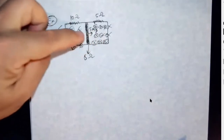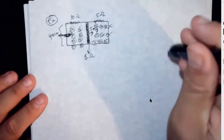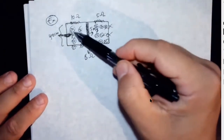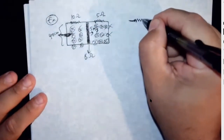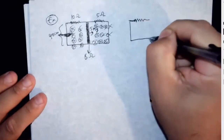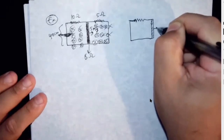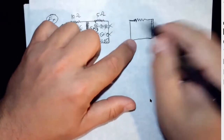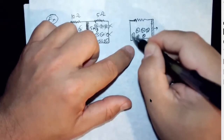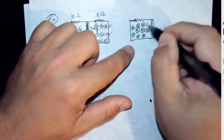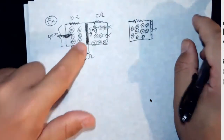So as this is sliding to the right, let's analyze what's happening on the left side. As this is sliding to the right, its area is increasing. So if the field is into the board and the area is increasing, what kind of current is going to be induced in this loop? I'm analyzing the left side here.